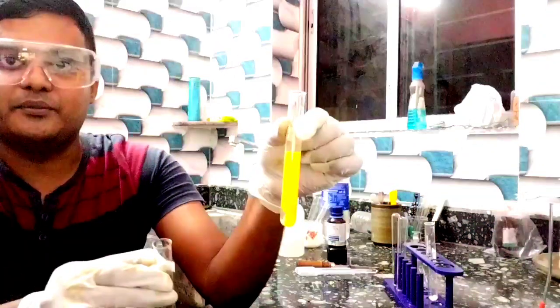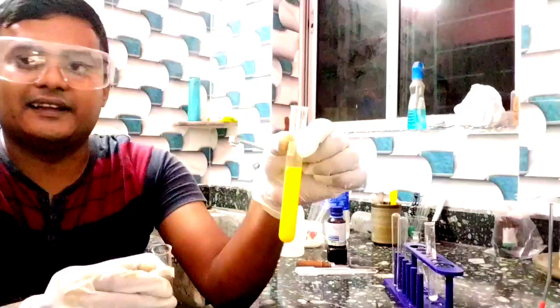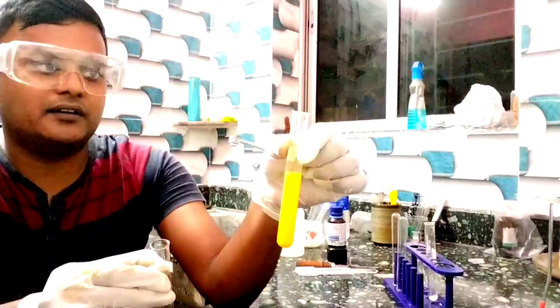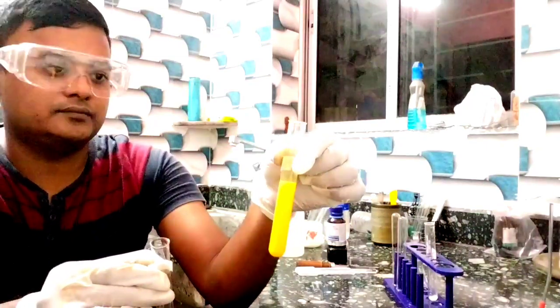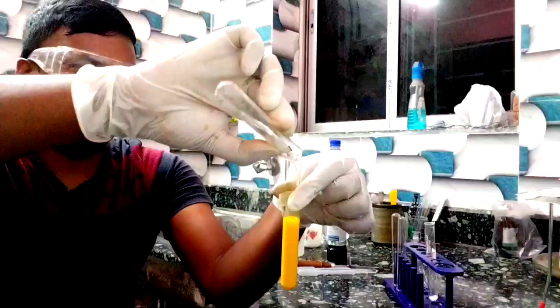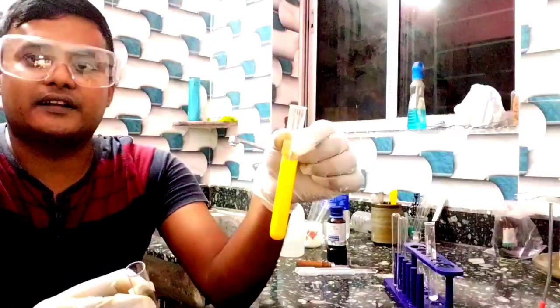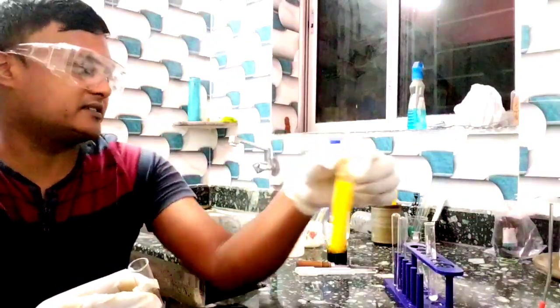See, bright yellow color of lead iodide! Bright yellow color of lead iodide. This is the detection of lead (Pb²⁺).